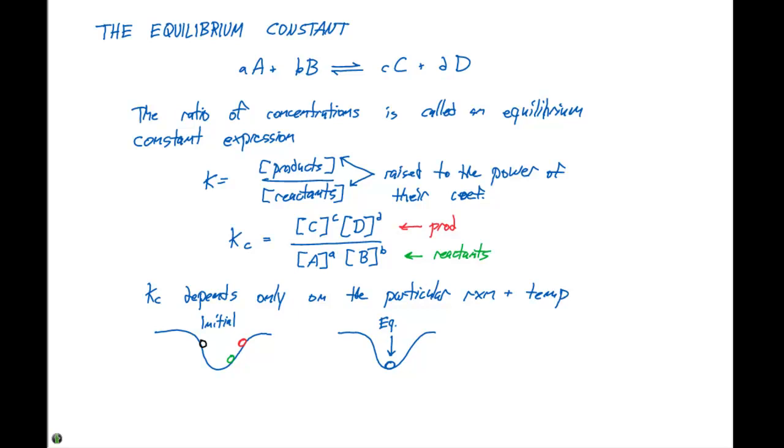If we were going to express this KC constant for a couple example reactions, consider 2NO gas plus O2 gas in equilibrium with 2NO2 gas. If we were going to write the KC expression for this particular equilibrium, we would do the concentration of the products, which is NO2 raised to their coefficients, divided by the concentration of the reactants, also raised to their coefficients. So KC would equal the concentration of NO2 squared divided by the concentration of NO squared times the concentration of O2.